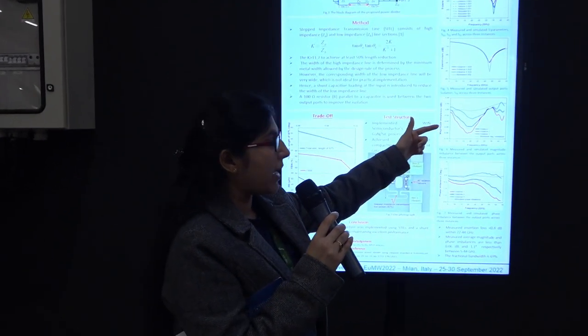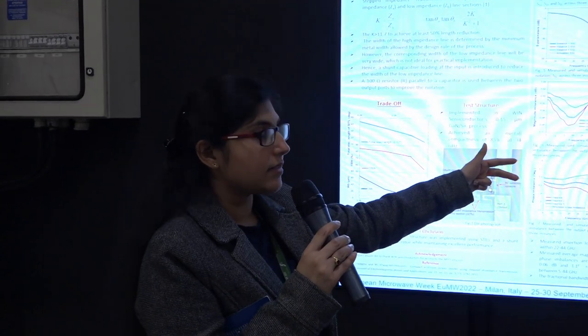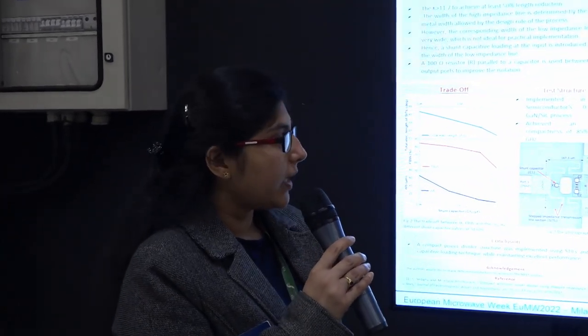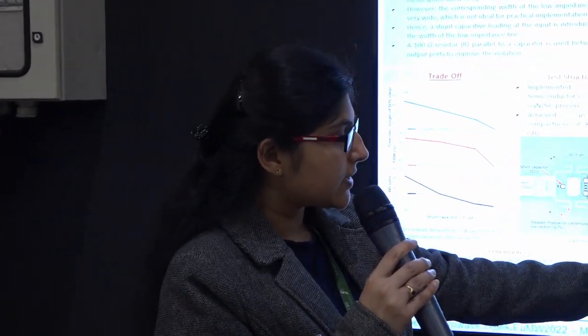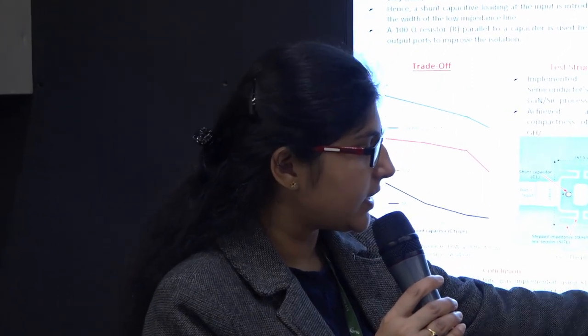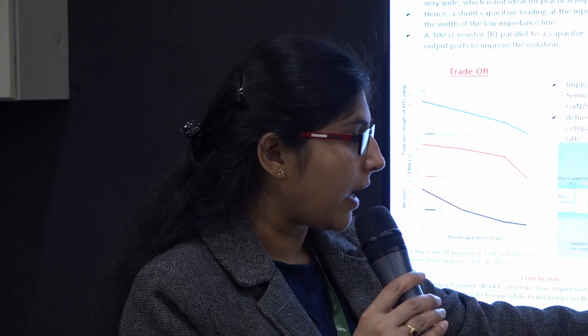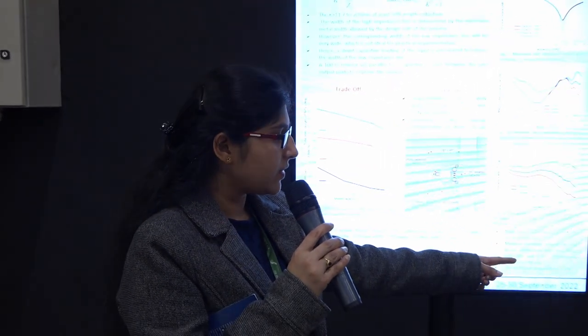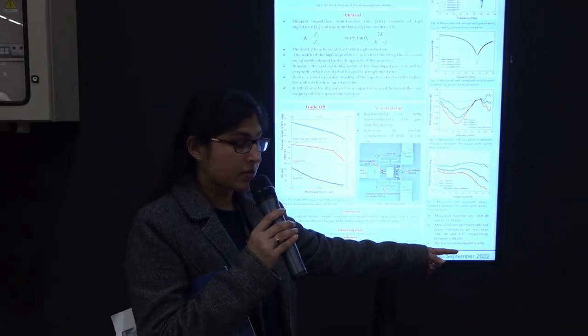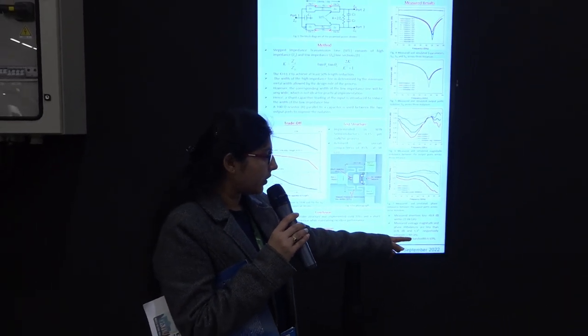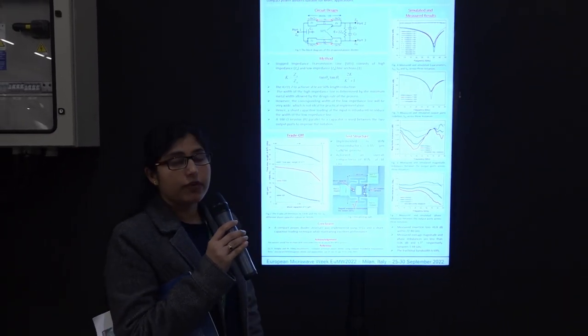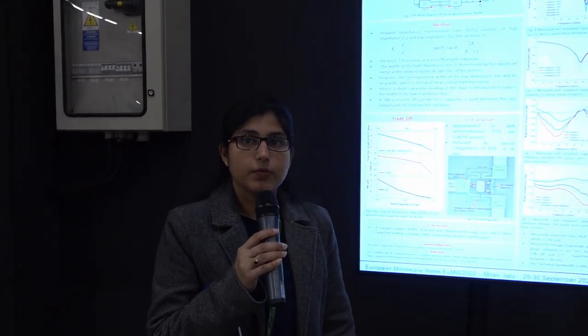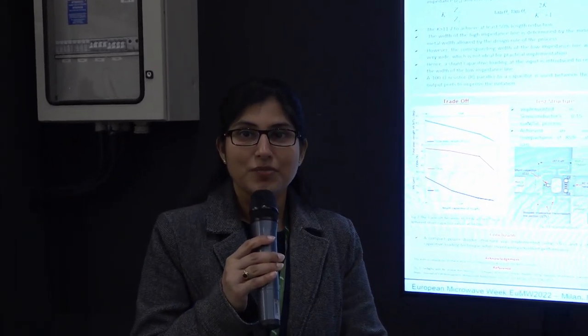Then we are presenting the magnitude and phase imbalances at the two output ports. What we have achieved is measured insertion loss of less than 0.8 dB between 22 to 44 gigahertz. The measured average magnitude and phase imbalances are less than 0.06 dB and 1.1 degree respectively between 5 to 44 gigahertz. We have achieved a fractional bandwidth of 69%. Thank you very much.